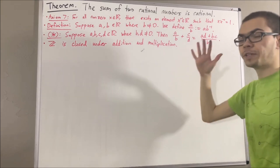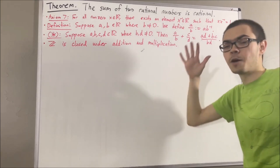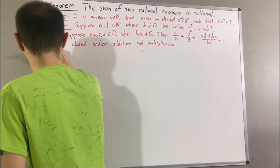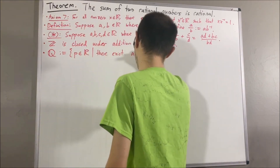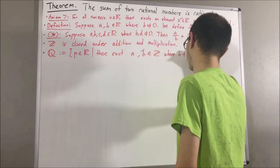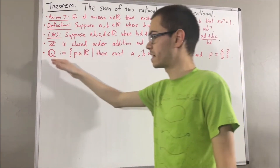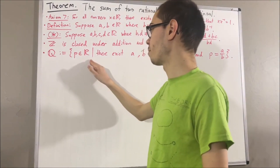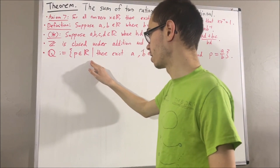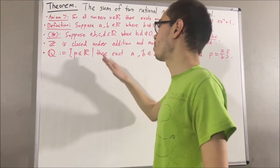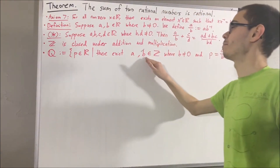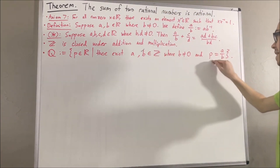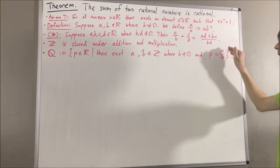We define the set of rational numbers as follows: the set of rational numbers is the set of real numbers p, with the property that there exist integers a and b where b is non-zero, and p is equal to a over b.